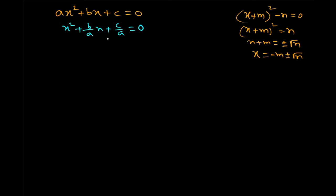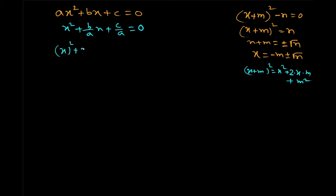Now let us arrange this in the square form. We need to write x squared plus 2 into x into something, so that we can match the pattern of a perfect square trinomial.